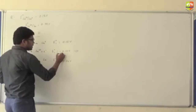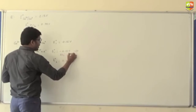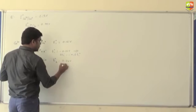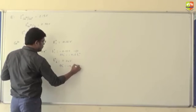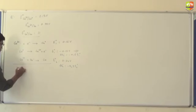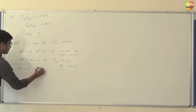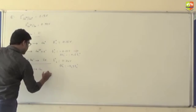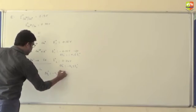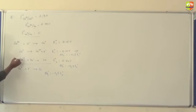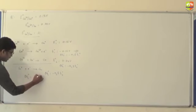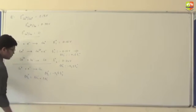We will calculate ΔG₁ for the first reaction: that will be −N₁FE°₁, and for the second it will be −N₂FE°₂. The net reaction when you add these two is Cu⁺ + 1 electron → Cu, so ΔG₃ = −N₃FE°₃, and E°₃ is what we have to find out.